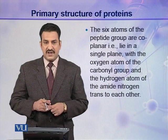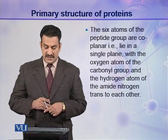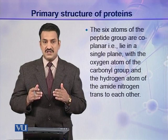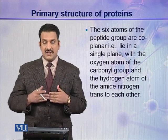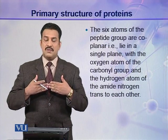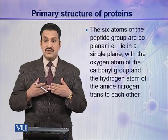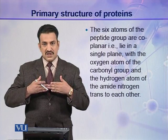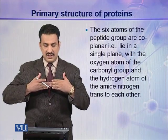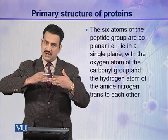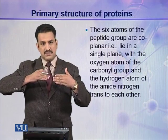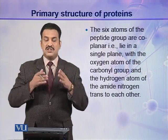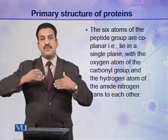The second important finding of Pauling and Corey was that the six atoms of a peptide group are coplanar — they lie in a single plane. A polypeptide or protein contains different peptide groups, and each peptide group has six atoms that lie in a single plane. The six atoms of the next peptide group lie in another plane, and so on — each set of six atoms occupies its own distinct plane.